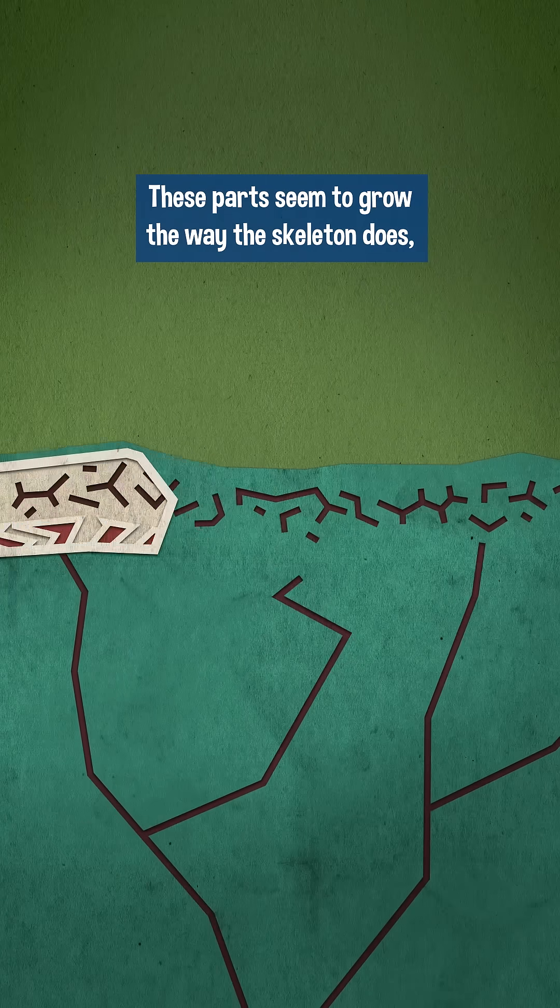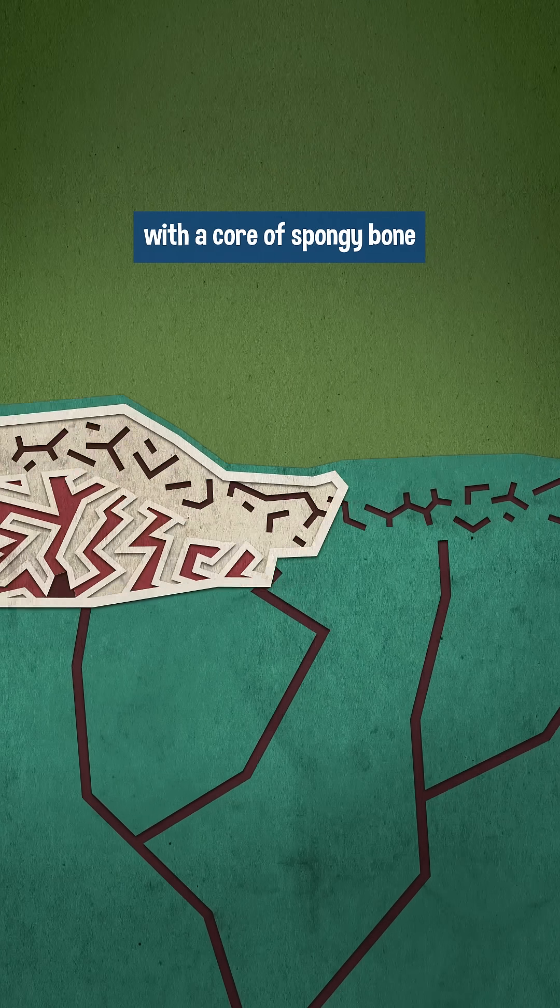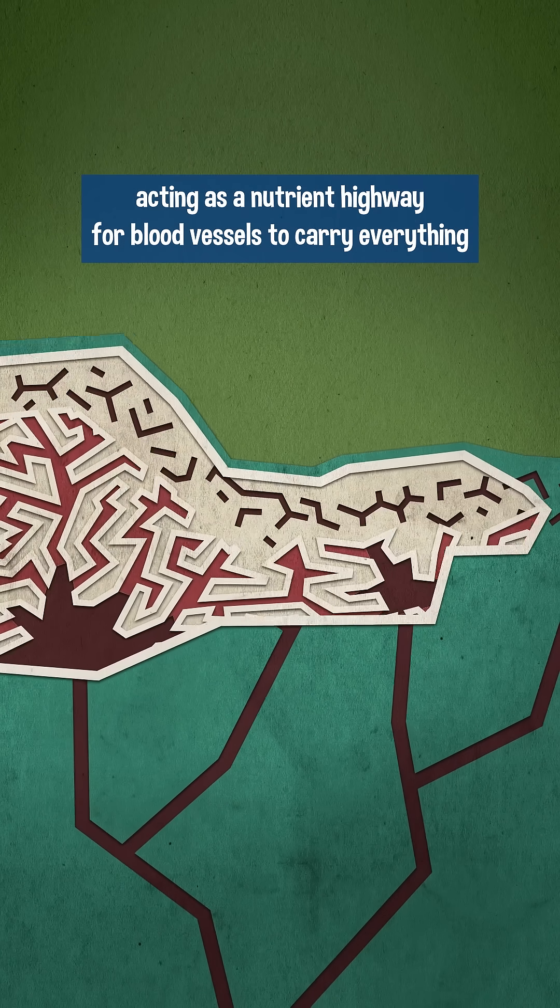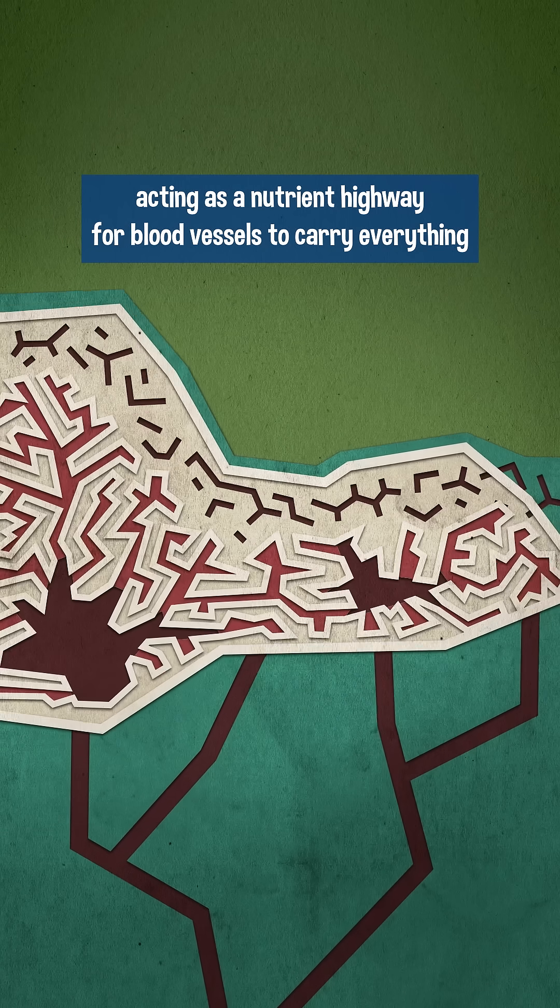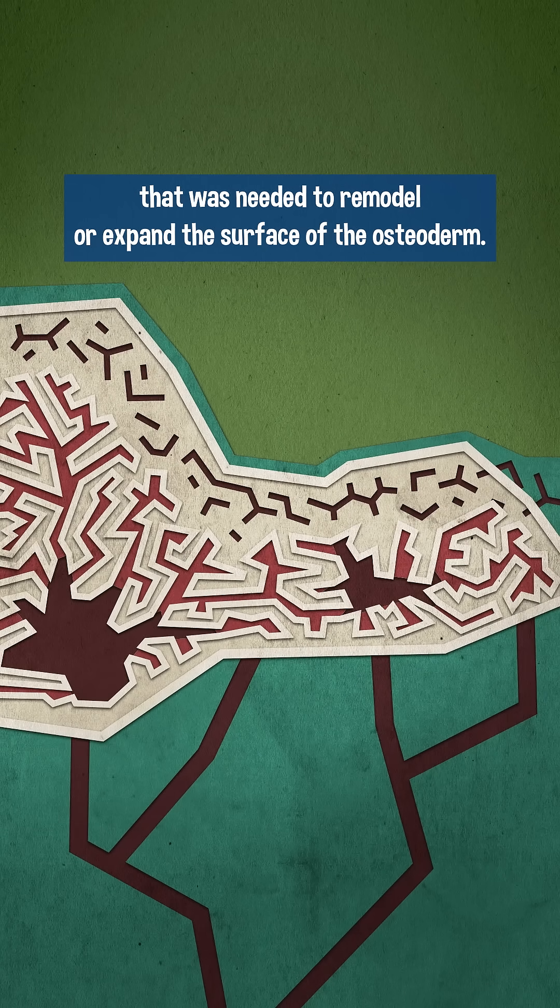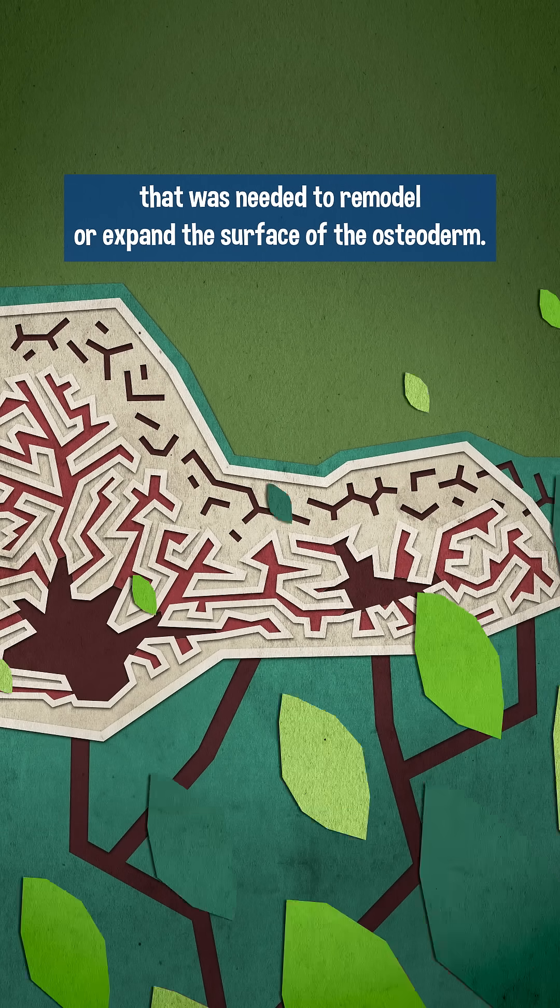These parts seem to grow the way the skeleton does, with a core of spongy bone acting as a nutrient highway for blood vessels to carry everything that was needed to remodel or expand the surface of the osteoderm.